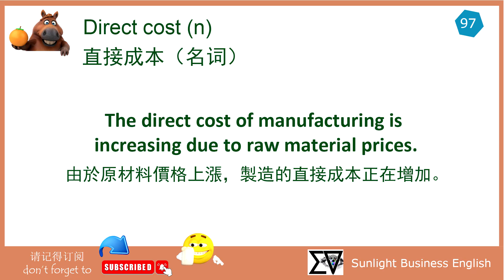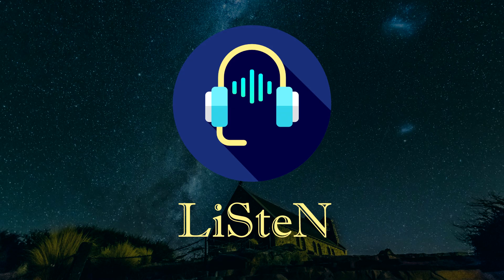Direct cost. 直接成本 — 名词. The direct cost of manufacturing is increasing due to raw material prices. 由于原材料价格上涨，制造的直接成本正在增加.